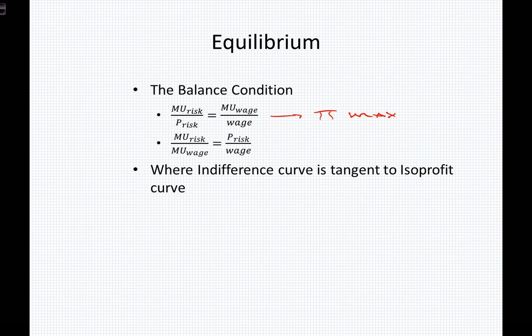If we rewrite the balance condition, we can put all of the marginal utilities into one term and the prices into another, such that the marginal utility of risk divided by the marginal utility of wage equals the price of risk divided by the price of wage. I divided both sides by the marginal utility of wage — eliminating it from the right-hand side and placing it in the denominator of the left — then multiplied both sides by the price of risk, placing it in the numerator of the right. Since the balance condition is profit-maximizing, this reformulation is also profit-maximizing.